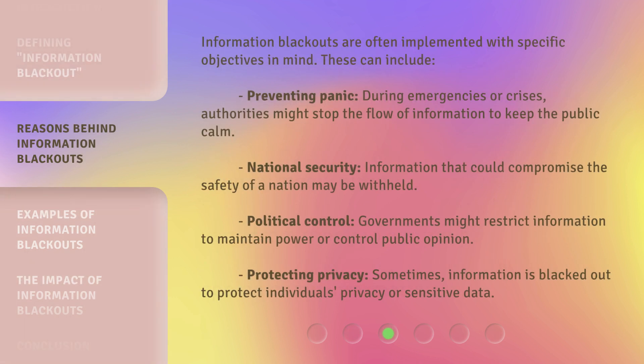Information blackouts are often implemented with specific objectives in mind. These can include: preventing panic — during emergencies or crises, authorities might stop the flow of information to keep the public calm; national security — information that could compromise the safety of a nation may be withheld; political control — governments might restrict information to maintain power or control public opinion; and protecting privacy — sometimes information is blacked out to protect individuals' privacy or sensitive data.